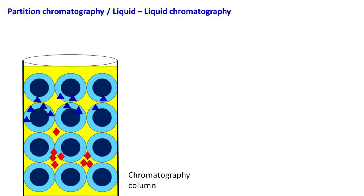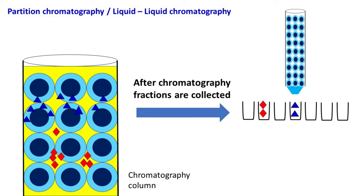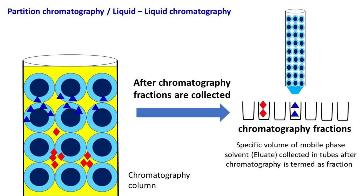The sample molecules are usually collected as fractions during chromatography. Liquid chromatography or partition chromatography can be used to separate varieties of biological molecules including proteins and enzymes.